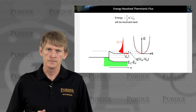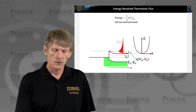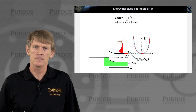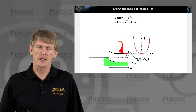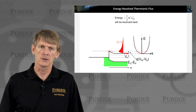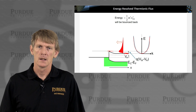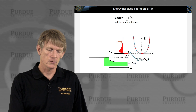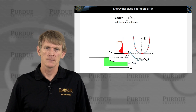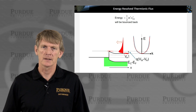We're assuming that carriers can only make it over the barrier here — there's no tunneling involved, so it's a classical theory. We can calculate a distribution of carriers: we have a Fermi function, in this case a Boltzmann distribution that decays exponentially, and we have a density of states that rises as the square root of E. We've calculated that before, so you have a sort of peaked function like this.